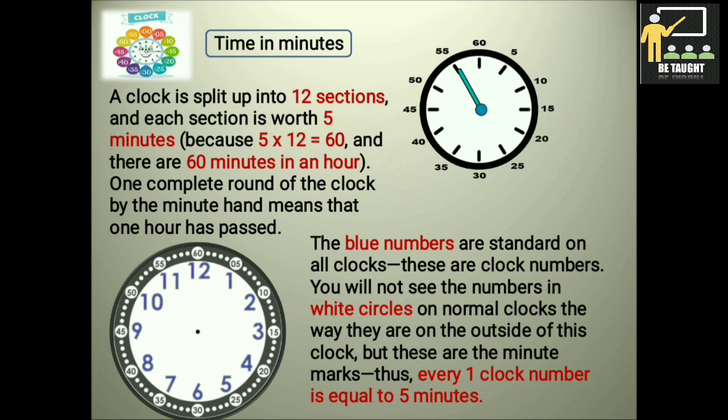Now in this picture, the blue numbers are standard on all clocks. These are clock numbers. You will not see the numbers in white circles on normal clocks, the way they are on the outside of this clock, but these are the minute marks. Like 1 stands for 5, 2 stands for 10, 3 means 15, 4 means 20, 5 means 25, 6 means 30, 7 means 35, 8 means 40, 9 means 45, 10 means 50, 11 means 55, and 12 means 60. Thus every 1 clock number is equal to 5 minutes.